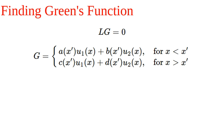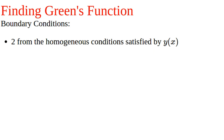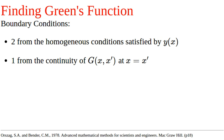To find the functions a, b, c, and d we need to use four boundary conditions. These include two from the homogeneous conditions satisfied by y of x, and one from the continuity of Green's function at x prime.